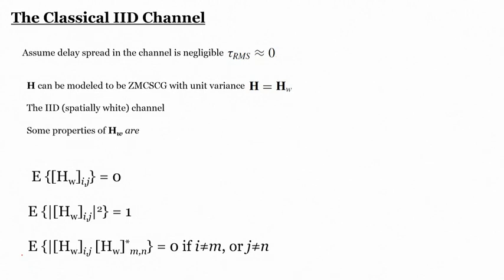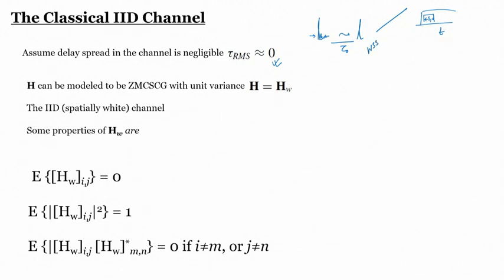We have been discussing the classical IID channel in the previous lecture and briefly we will mention it again for continuity. One important assumption is that the delay spread is negligible, meaning the channel impulse response is very narrow — almost approximated to a delta function with only a delay — so it is flat in frequency. We also assume slow fading, meaning the channel fluctuates at a rate much smaller than the symbol duration. We also discussed wide sense stationarity, uncorrelated scattering, the homogeneous channel, and the narrow band antenna array assumption.